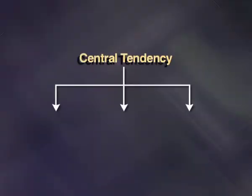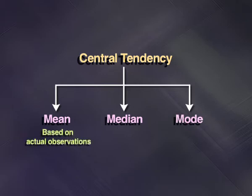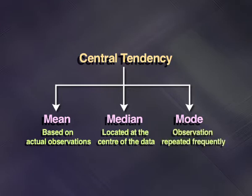When describing the values of a single variable, it is customary to report on both the central tendency and the dispersion. Not all measures of central tendency and not all measures of dispersion can be used to describe the values of cases on every variable. Depending on the type of data and the purpose of the study, measures of central tendency and dispersion should be used. The different measures of central tendency are mean, median and mode. Mean is based on actual observations. Median is located at the center of the data and mode is the observation repeated most frequently.